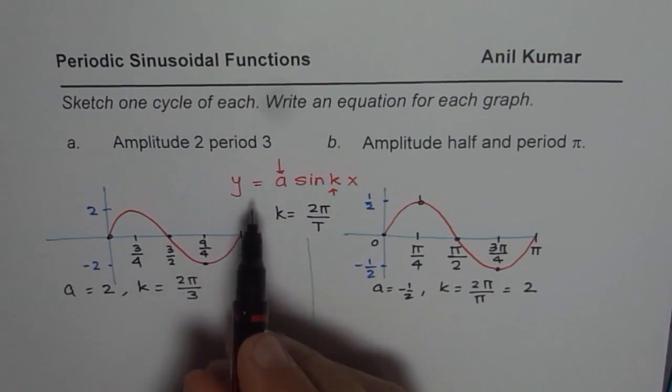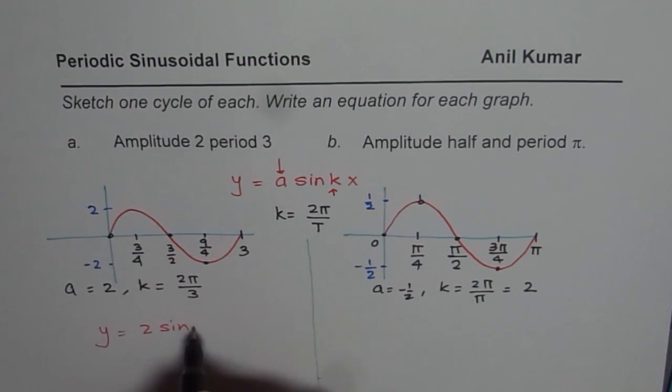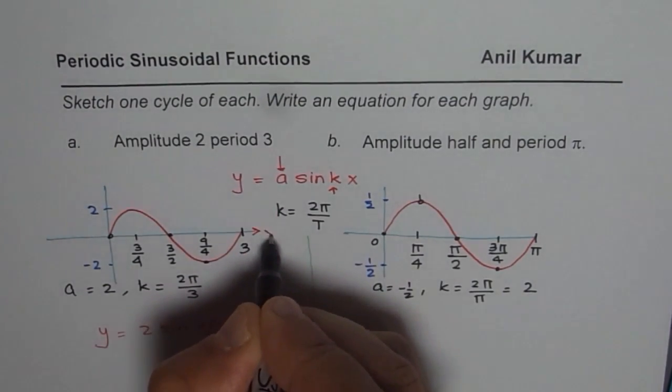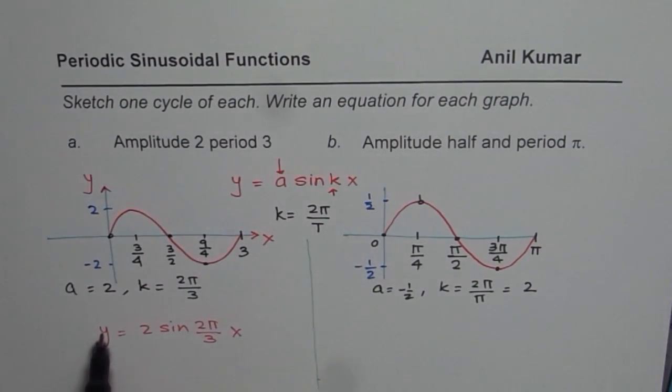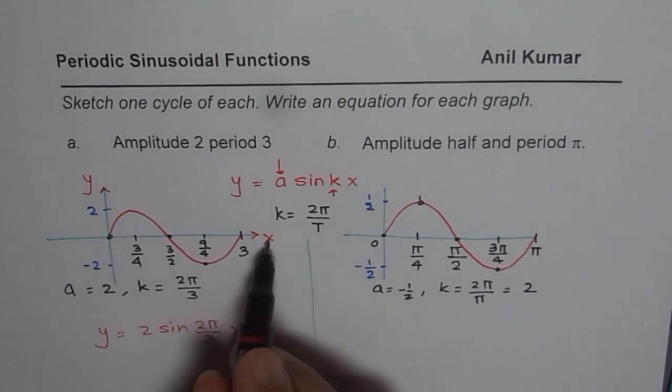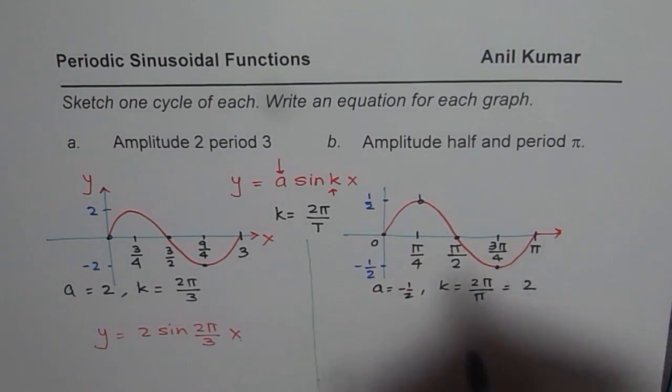So let me write down the equation now. Simple. y equals to a is 2 sine of k is 2 pi by 3 x. So when I write x, I will write x here. Do you see this? x. And that is my y value. So y, the independent variable, the dependent variable, is dependent on this independent variable x. You get the point.